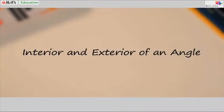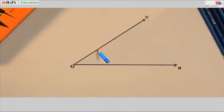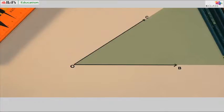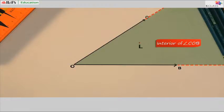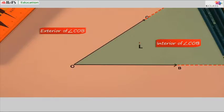Interior and exterior of an angle. Look at this figure. The green coloured area shows a part of the interior of angle COB. The interior of the angle is infinite. Point L lies in the interior of angle COB. The red coloured area indicates the exterior of angle COB. The exterior of the angle is also infinite. Point M lies on the exterior of angle COB.